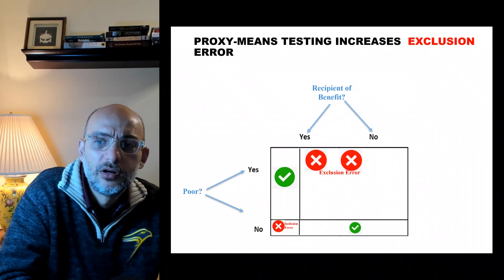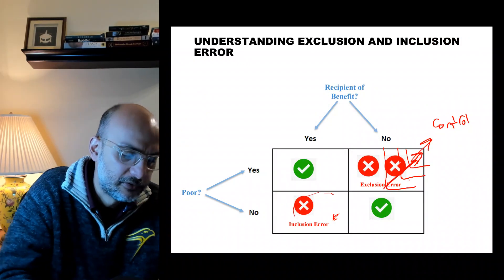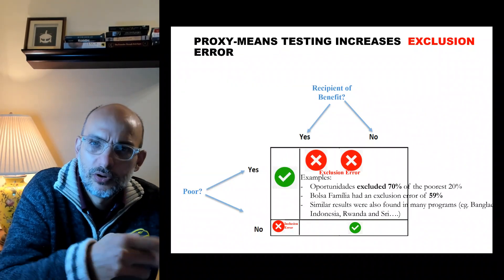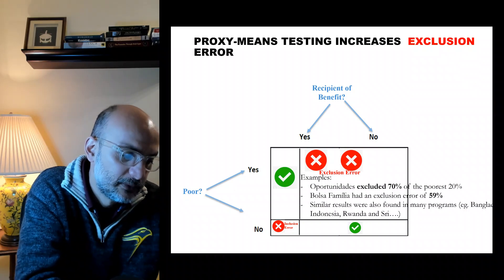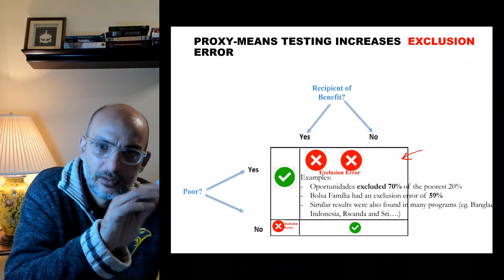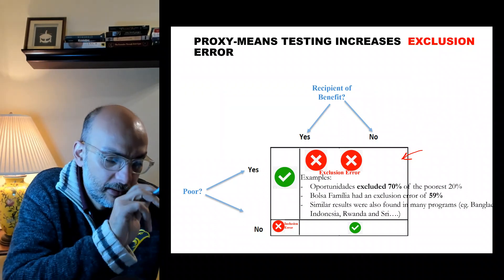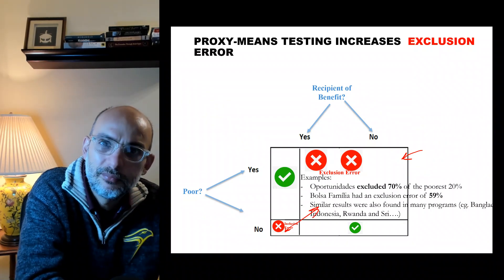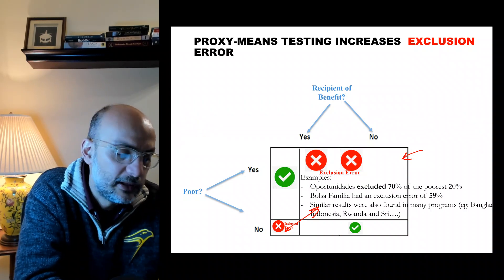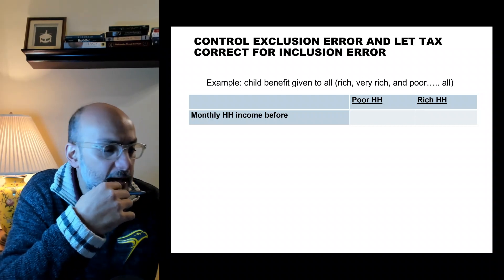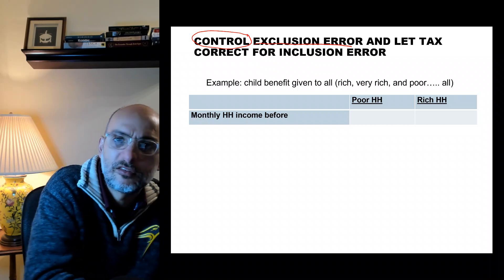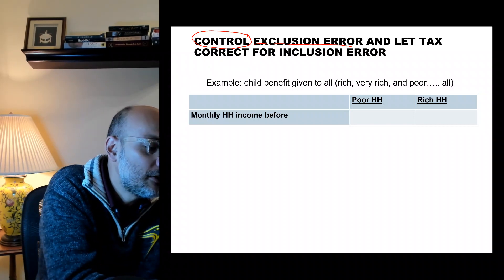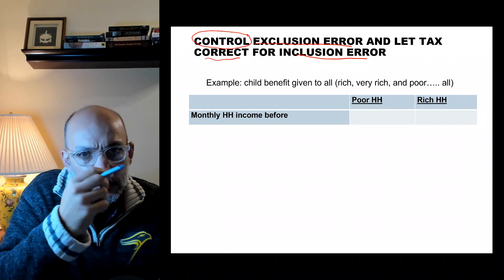At the same time, when you reduce exclusion error, you need to also control for inclusion error. You can tolerate maybe five percent inclusion error at maximum, and then correct for it. Rich people receiving the benefit — that can be corrected through the tax system. Let the taxation system be designed to correct for the inclusion error.